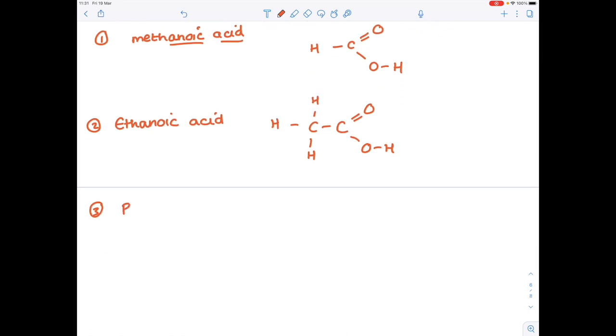The third carboxylic acid now is propanoic acid. So we'll draw three carbons in a row. Add the all-important functional group. Complete with hydrogens. And that's propanoic acid.